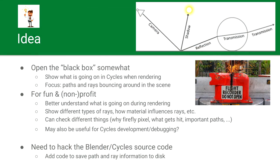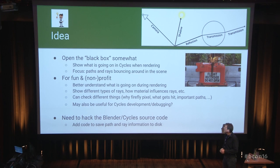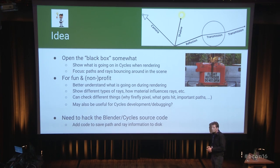So I figured maybe we can open the black box a little bit — the black box that is Cycles — show what is going on when you render something, and focus on the paths and the rays that shoot through the scene. It's a fun little project to hack the code to get that done. It might give a better understanding of how rendering works, show different kinds of rays, how material influences the rays. You can also check things — for example, if you render something and it has a firefly or a caustic that doesn't work, you can try to find out what's happening. It might even be useful for Cycles development or debugging.